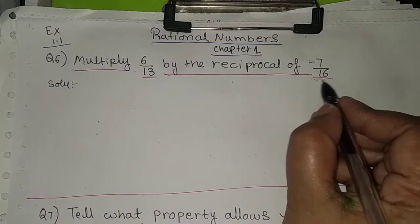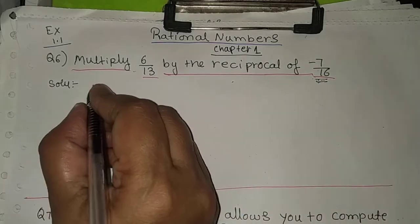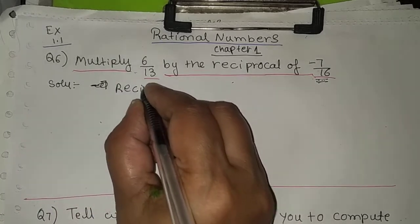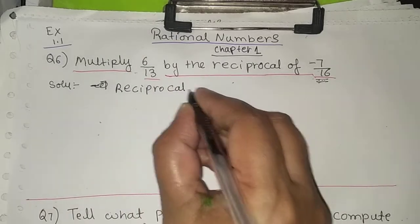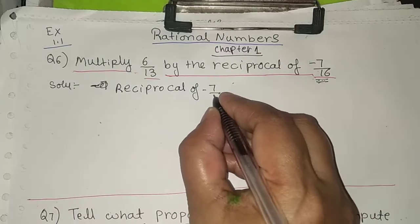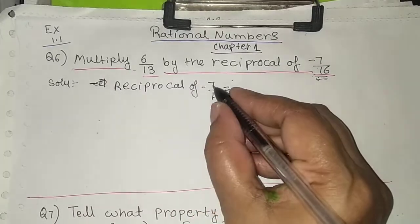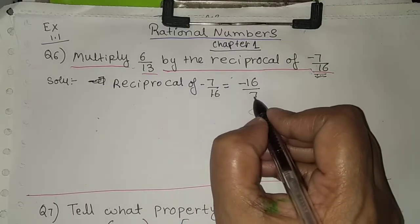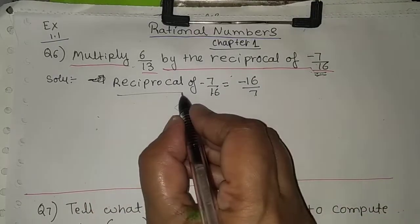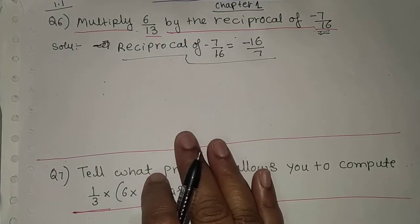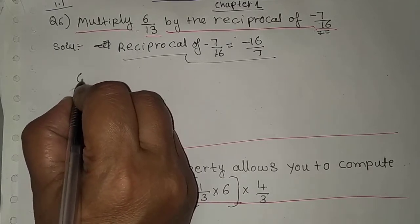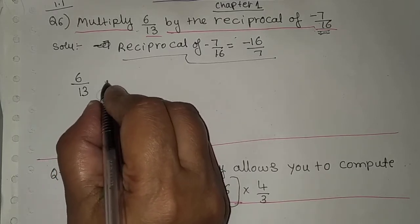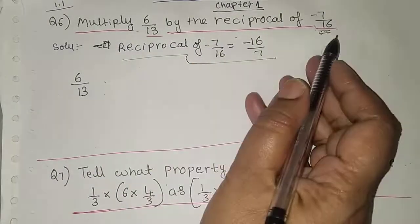Solution: first we find the reciprocal of minus 7/16. The reciprocal of minus 7/16 is minus 16/7, because the numerator becomes the denominator and the denominator becomes the numerator. This is called the reciprocal of the given number. Now we take the other number, that is 6/13, and multiply these two.